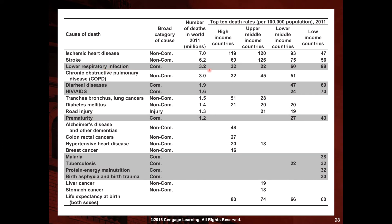Lower respiratory infection caused 3.2 million deaths. In more recent years, most deaths are caused by non-communicable diseases, as discussed earlier in this chapter, and communicable diseases show less incidence.